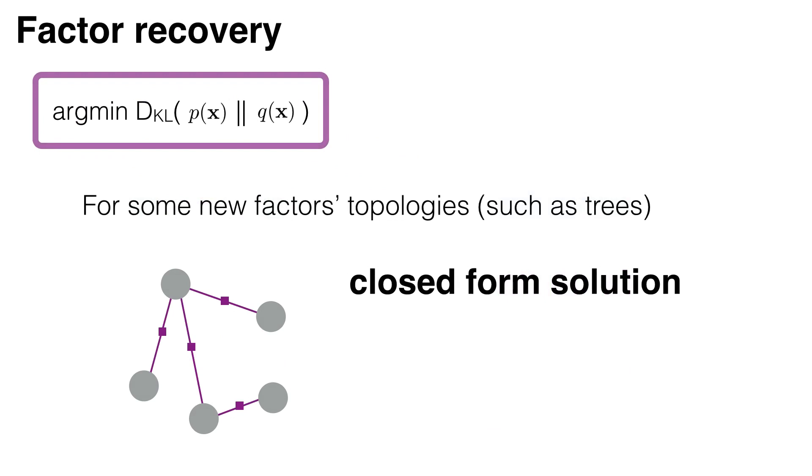For some simple topologies such as trees, there is a closed-form solution, so it's fast. But since the topology is so simple, the approximation is normally bad.